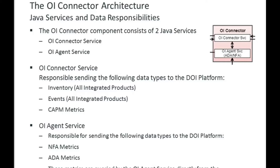The OI Connector service knows what inventory is being delivered and informs the OI Agent service of that inventory so it knows which metrics to harvest. This way, the agent service only sends metrics related to the inventory relevant to this integration, not everything ADA and NFA are monitoring. There is no database storage involved with the OI Connector.